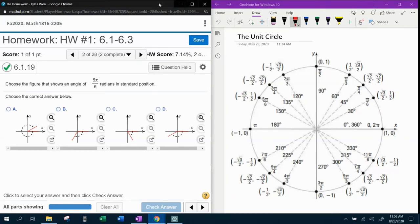All right, here we go. Question number two from our 1316 homework number one in MyLabMath, and they want us to choose the figure that shows an angle of negative 5 pi over 6 radians in standard position.